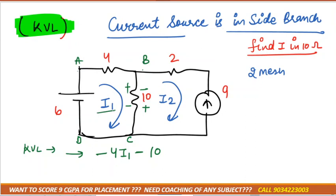From this side I1 is flowing, so it would be I1 minus I2. If we take the mesh I2 then it would be I2 minus I1 because both the currents are moving in the opposite direction.